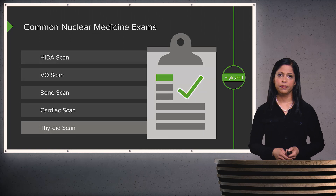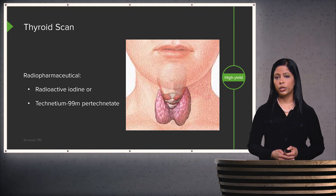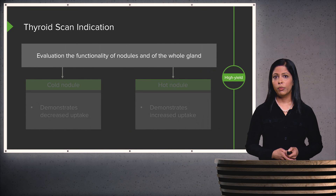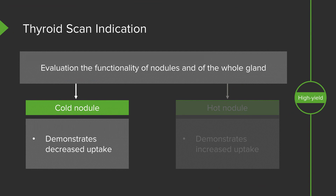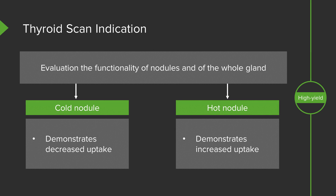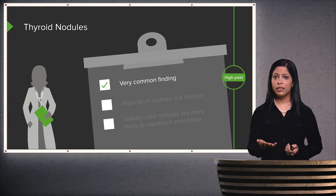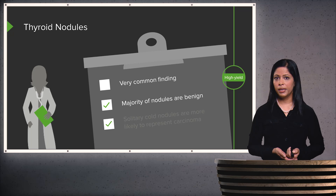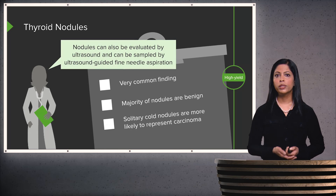Let's move on to thyroid scans. The radiopharmaceutical used can either be radioactive iodine or technetium-99-pertechnetate. Thyroid scans are used to look at the functionality of nodules and the entire thyroid gland. Cold nodules demonstrate decreased uptake relative to the rest of the gland, while hot nodules demonstrate increased uptake. Nodules are a very common finding and are often evaluated on ultrasound, but functionality can only be assessed on a thyroid scan. The majority of nodules are benign; however, solitary cold nodules are more likely to represent a carcinoma than hot nodules. Nodules can also be sampled using ultrasound-guided fine needle aspiration.